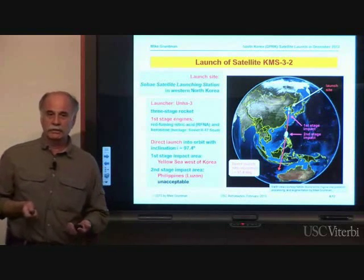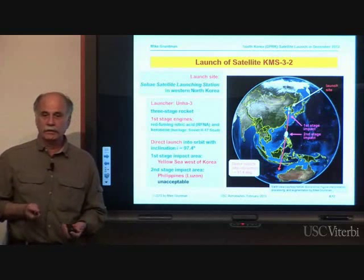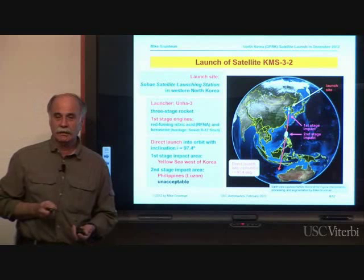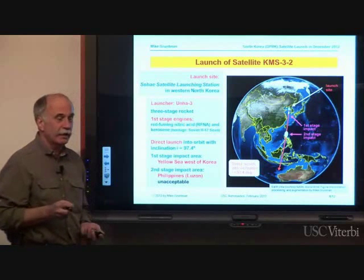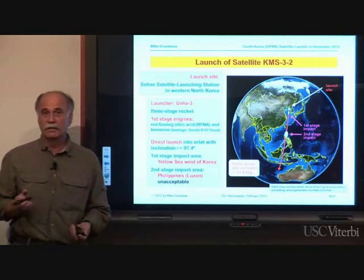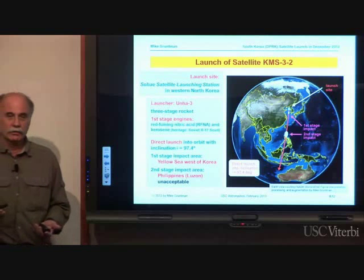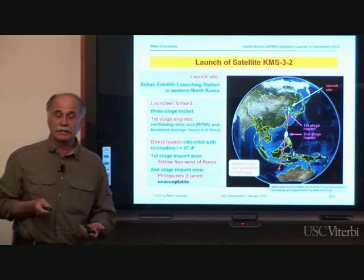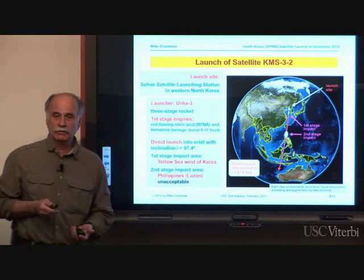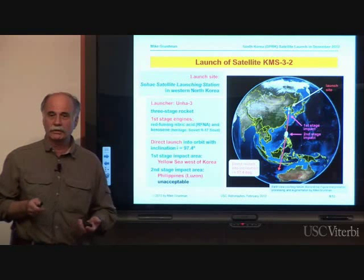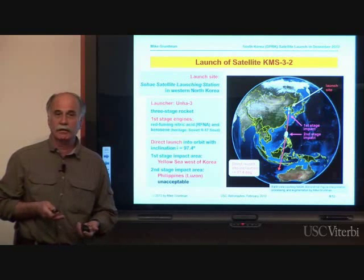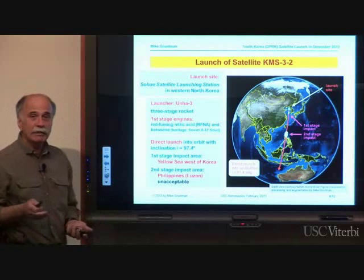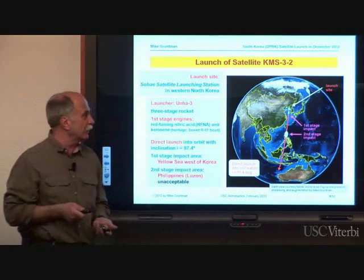As you saw, the North Koreans really knew what they were doing. They were trying to put a satellite into a very useful orbit, and they nearly succeeded. The error in inclination at deployment was only about 0.1 degree. On the next launch they will reduce this error — they are learning from their mistakes, and they know what they're doing. The technology is there.